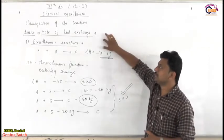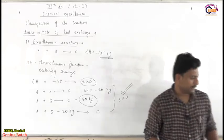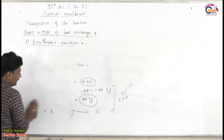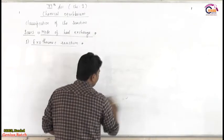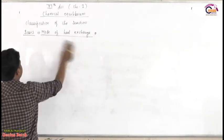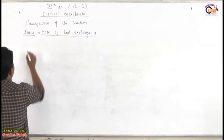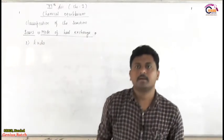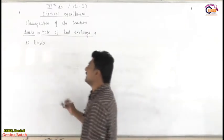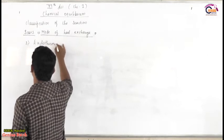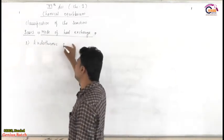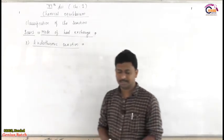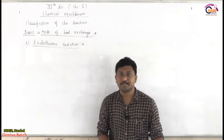This is the first class based on mode of heat exchange, called exothermic reaction. Now, the second class of reaction is endothermic reaction — quite similar but opposite to the exothermic type. 'Endo' means absorbed or taken in, and 'thermic' means heat. Endothermic stands for the reactions in which heat is absorbed. So the reaction in which heat is absorbed is called an endothermic reaction, and the reaction in which heat is given out is called an exothermic reaction.